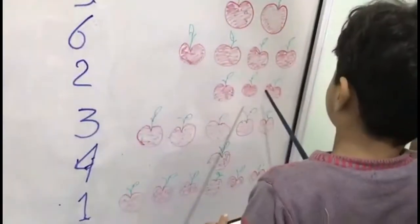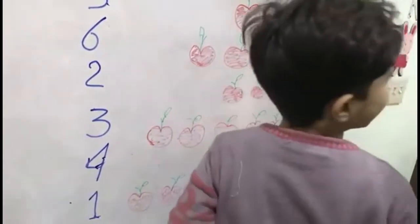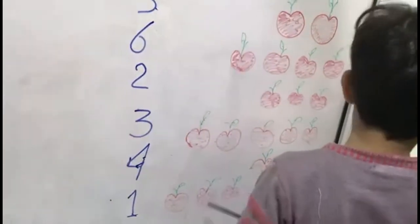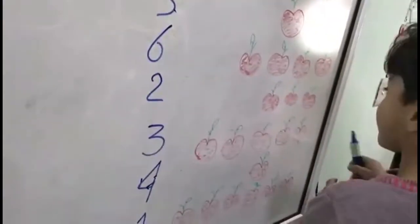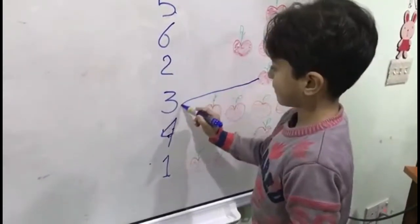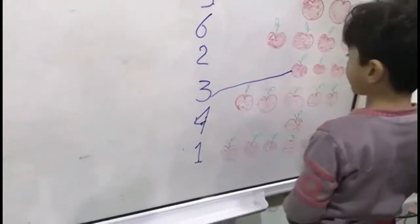One, two, three. Very good, three. Where is number three? Yes. Connect. Connect the apples to the number. Very good. Clap for Hammed. Clap, clap, clap.